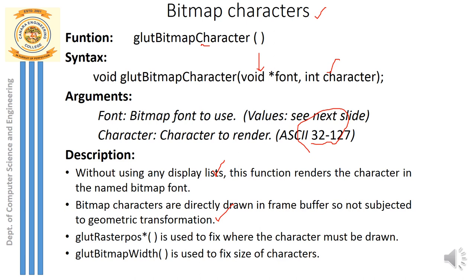Apart from glutBitmapCharacter, we can also specify a position just before displaying the character using glRasterPos. This function fixes a position on the display window where the bitmap character will appear. There is also glutBitmapWidth, which allows you to increase or decrease the size of the displayed character.